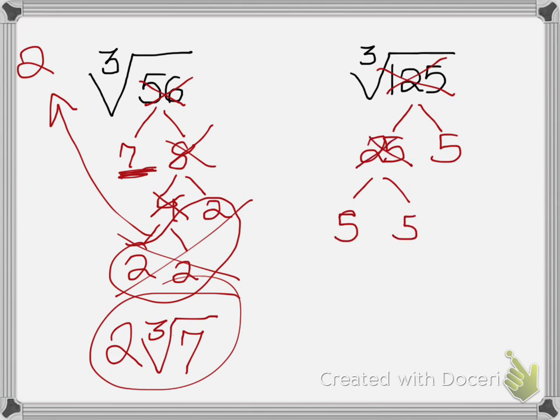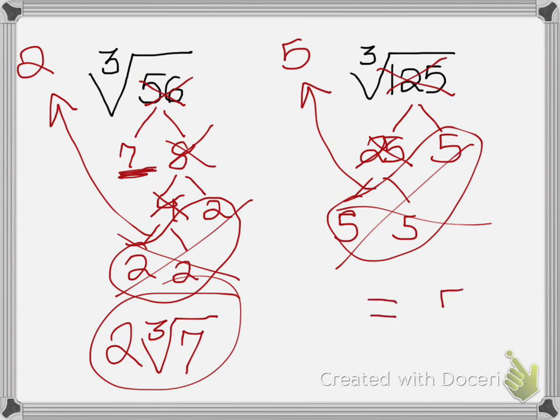Once again, the question is, do I have three of the same thing so I can take one of them out? I do. I have three fives, so I take one of them out in front. Do I have any leftovers after I take one of them out? Nope. So that means 125 was a perfect cube. So therefore, my answer would just be five. I will not write the cube root in my final answer, simply because I don't have any more leftovers.